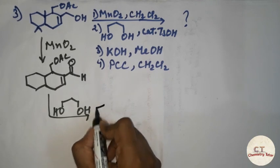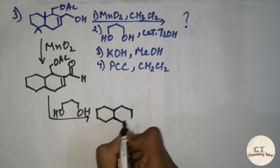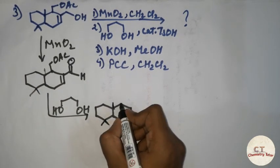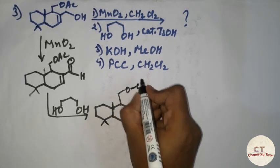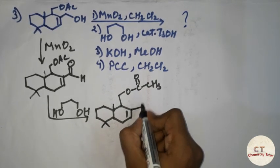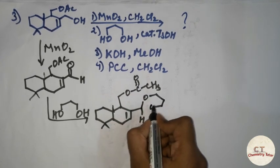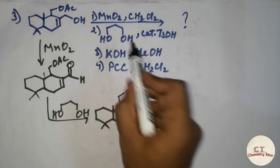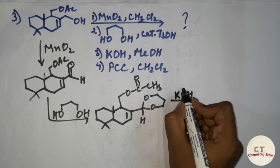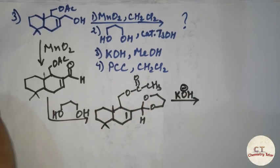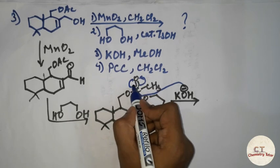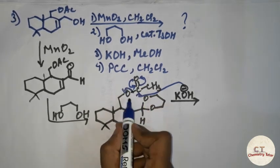I will show you what the product is — the other group will remain as such, no change. I'll write it in full: OAc is OCO-CH3. This acts as a protecting group. After adding this, KOH is added. KOH is a base, but at the same time it can also act as a nucleophile. Here it will act as a nucleophile and attack the carbonyl carbon; the charge will come down, this bond will break, and negative charge will be on the oxygen atom.